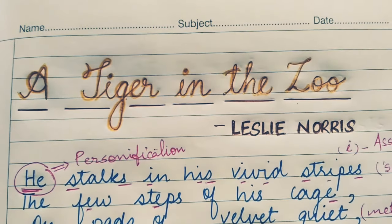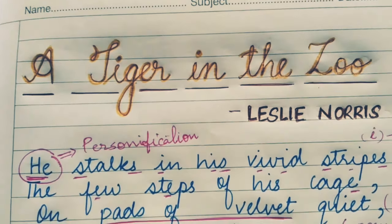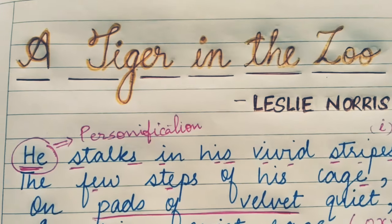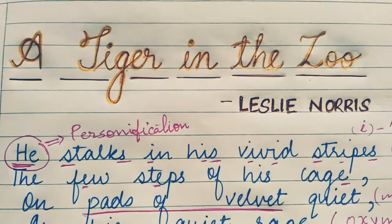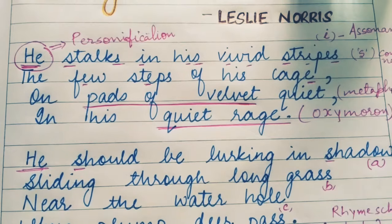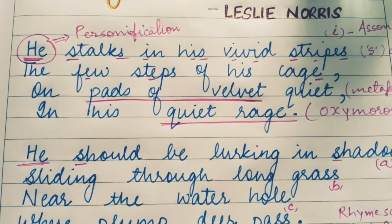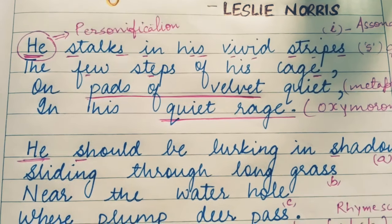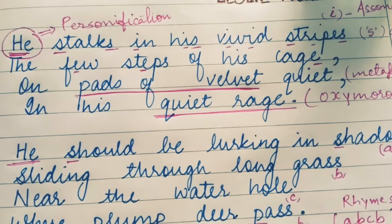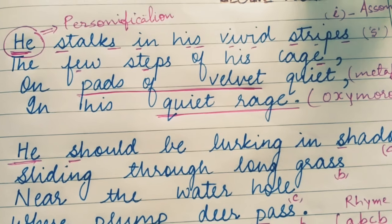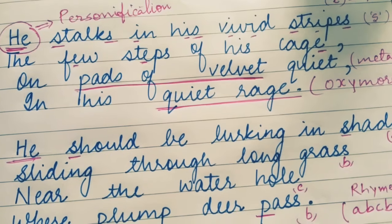Hello students. Today in this video I will explain the poetic devices used by the poet in the poem 'A Tiger in the Zoo.' First of all we will discuss the rhyme scheme of this poem. The rhyme scheme of this poem is ABCB. The whole poem follows this rhyme scheme of ABCB.